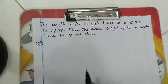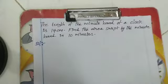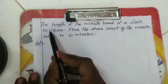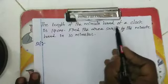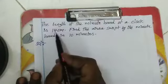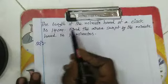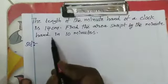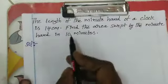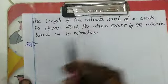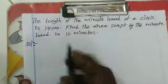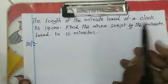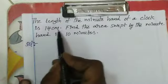Welcome to Print C Tutorials. Today we are going to discuss the problem. The length of the minute hand of a clock is 14 cm. Find the area swept by the minute hand in 10 minutes. This is a most important problem. Given: the length of the minute hand of a clock is 14 cm.